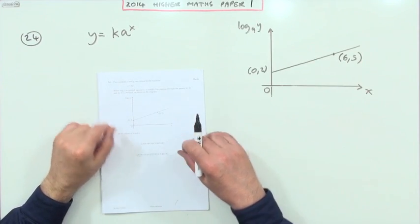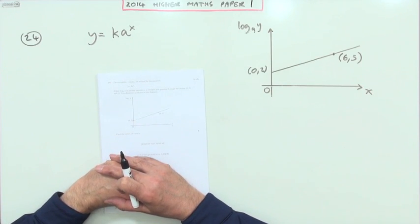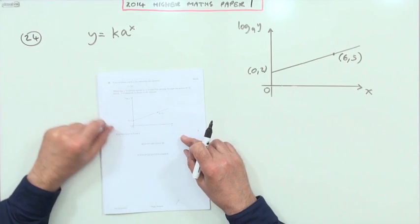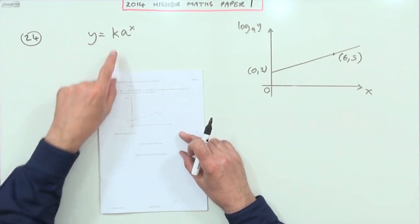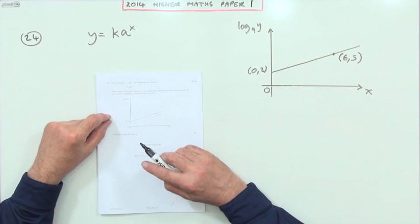So question 24, the last one in section B of paper one of the 2014 higher maths paper. You've got this exponential equation and you need to find the value of k and a. There are two ways you could do that.